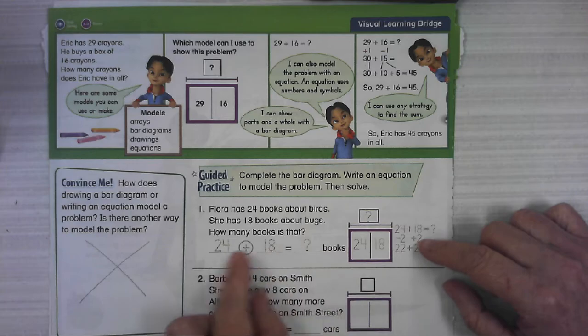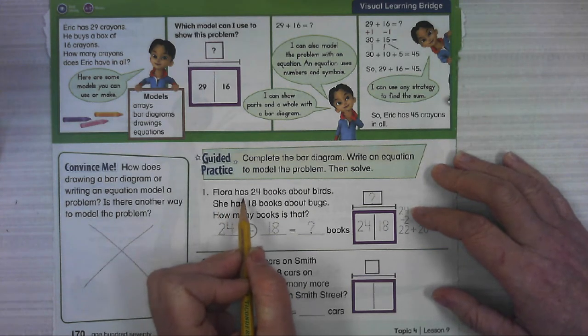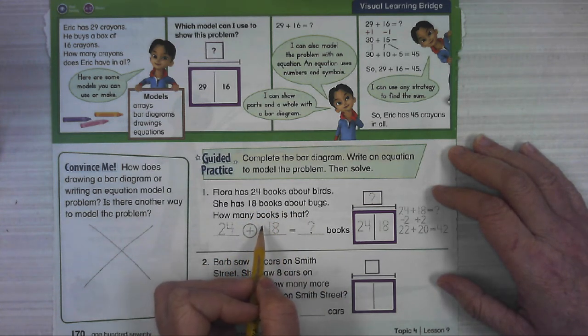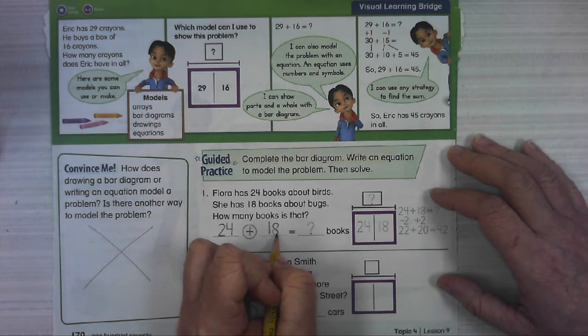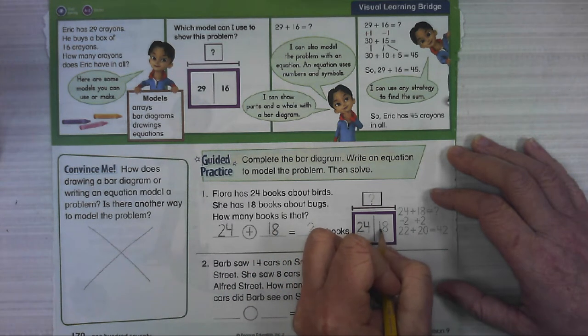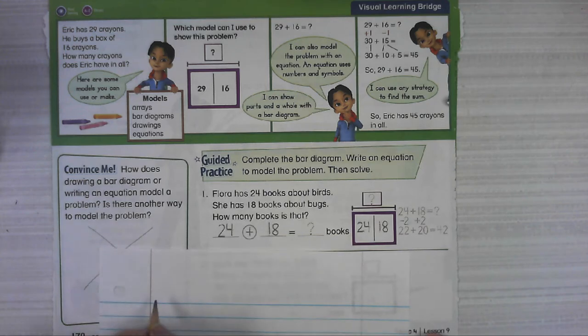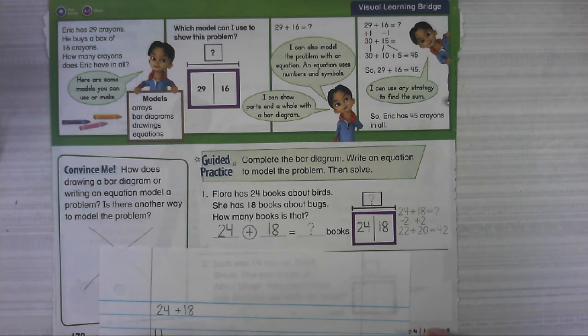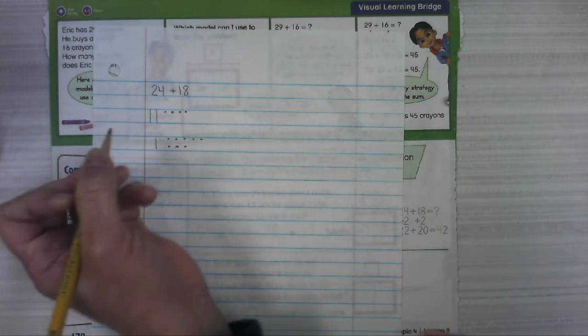Number one. We're gonna try to use the bar model if it makes sense but if not we're gonna use our favorite strategy. Flora has 24 books about birds. She has 18 books about bugs. How many books is that? So we're putting her books together, her bird books and her bug books. And we can show that in a bar model. But we still have to add it together. Grab that handy dandy scratch paper. And I'm gonna model 24 and I'm gonna model 18, and I'm gonna put it together.